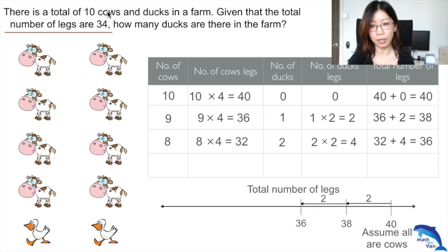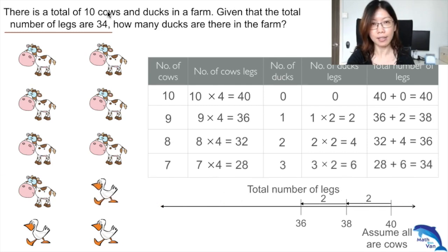Total number of legs from the cows and the ducks is 36. We observe a similar pattern - whenever you replace one cow with one duck, you have a consistent result of 2. The total legs will drop by 2. Still too many, let's continue again. Finally, you get your answer at 34. That is when you have met the two conditions: 10 animals and a total of 34 legs.